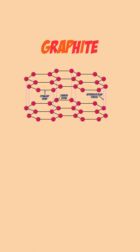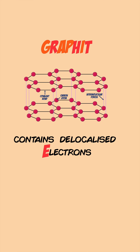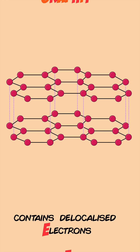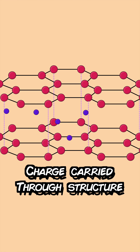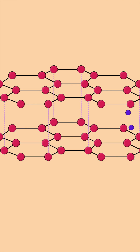The E at the end of graphite tells you that there is an electron that's delocalized in each carbon atom. This allows it to conduct electricity, as an electrical charge can be carried throughout the structure.